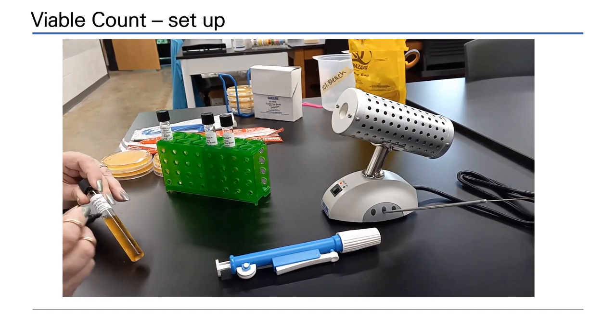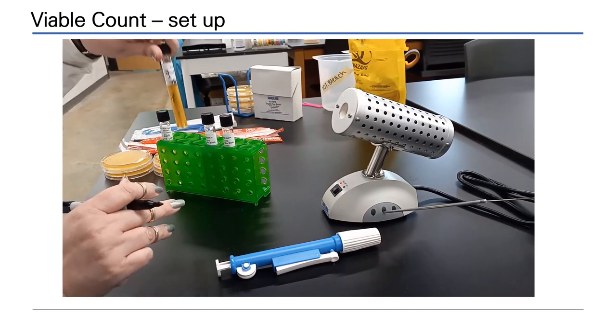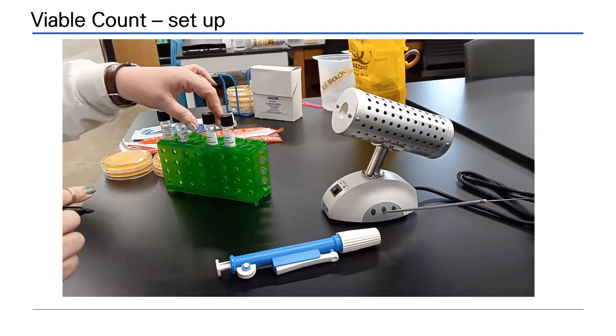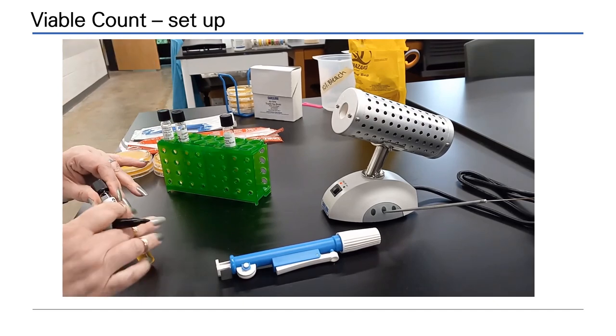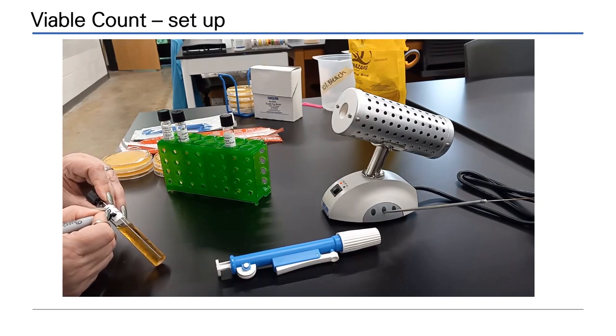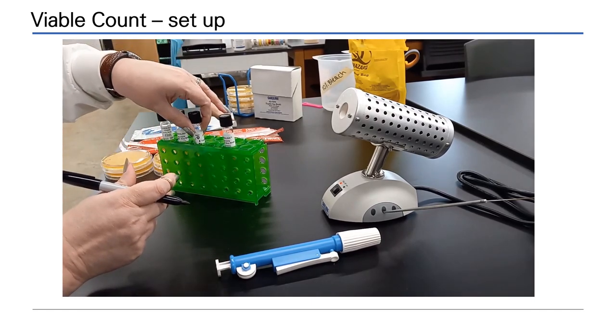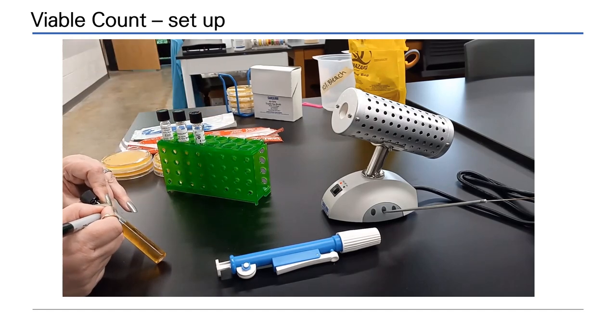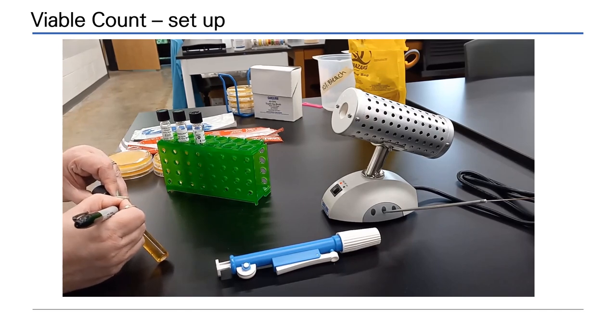We will dilute 1 to 10, or 10 to the minus 1, then carry it through for a further 1 to 10 dilution, which will be a total 1 in 100 dilution, or 10 to the minus 2. The last tube will be the next 10-fold dilution, but relative to the original, this will be a 1 in 1000 dilution, or 1 times 10 to the negative 3. Label everything before you begin the viable count procedure.